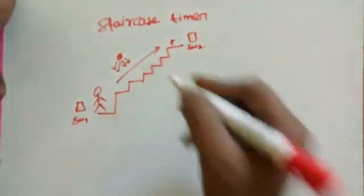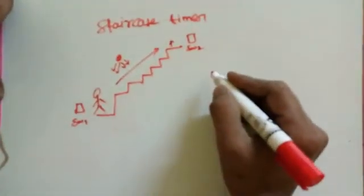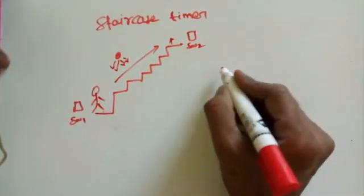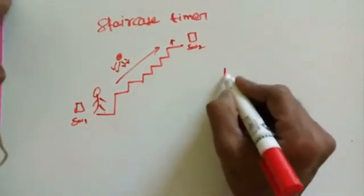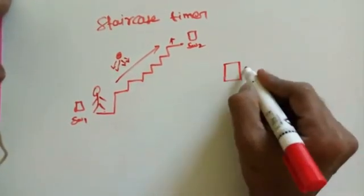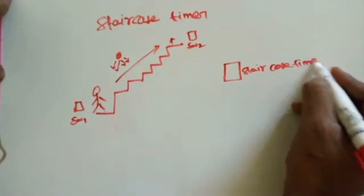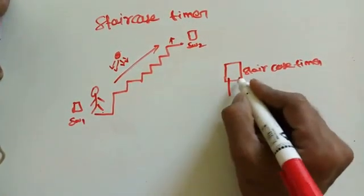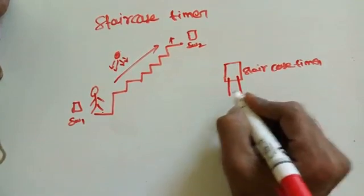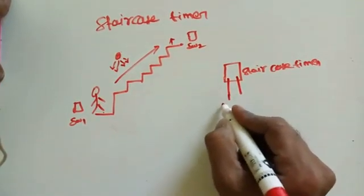Now we are going to see the wiring diagram. Just see, this is for staircase timer. Staircase timer - in here one and two, this is for switch one and switch two.